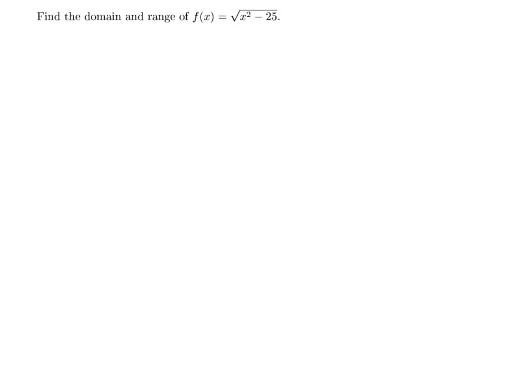So because it's a square root, we want real valued numbers. That means we want the square root of positive numbers, or actually non-negative numbers, because the square root function can equal 0. So we want to know when x squared minus 25 is greater than or equal to 0.